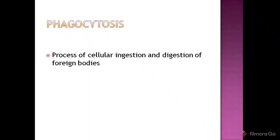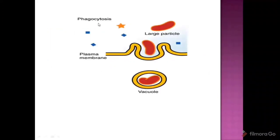Also, phagocytosis. Phagocytosis is a cellular ingestion or digestion process for foreign bodies. The cell ingests and digests foreign bodies. In the diagram, you see a plasma cell membrane. Large particles and foreign objects come into contact with the plasma membrane, are ingested, and digested — forming a vacuole. This is the process of phagocytosis.